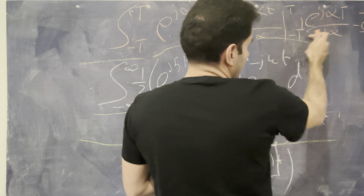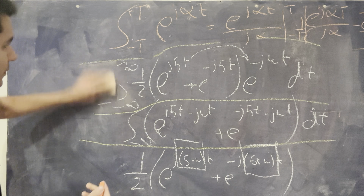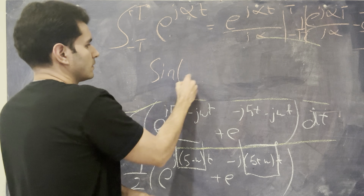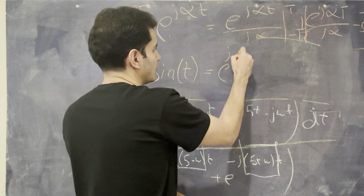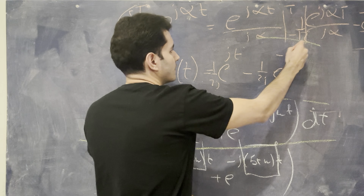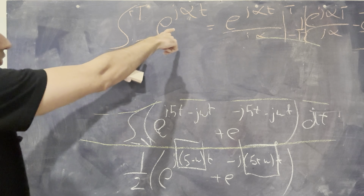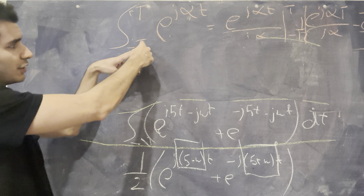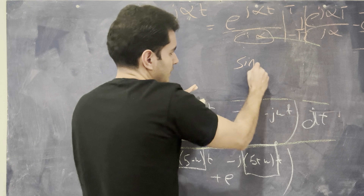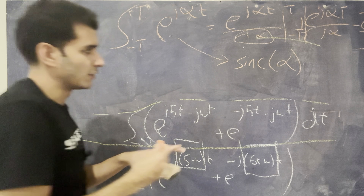When you evaluate that over the finite bounds, you end up with terms like e^(j alpha t) over j alpha minus e^(-j alpha t) over j alpha. Factoring out the j and the half gives you the sine function from Euler's identity — sine(t) = (1/2j)(e^(jt) - e^(-jt)). So integrating over a finite period gives a sinc function rather than a delta spike.